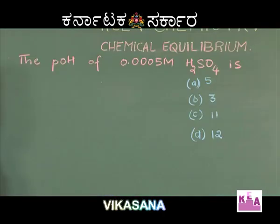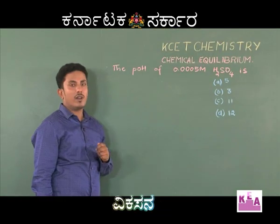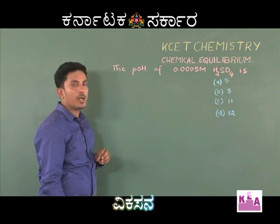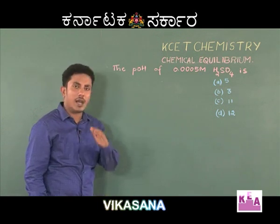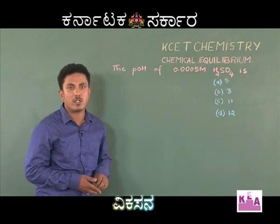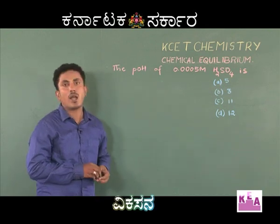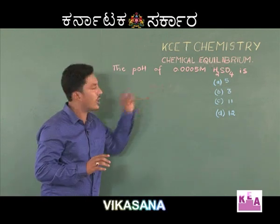This question is related to the pOH of a solution. The pOH of 0.0005 molar H₂SO₄ is: Option A: 5, Option B: 3, Option C: 11, and Option D: 12. Using H₂SO₄, we can calculate the pH of the solution, and then using pH + pOH = 14, we can calculate the pOH.